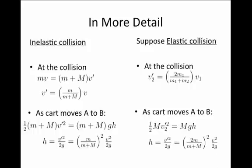So again, h is v2 prime squared over 2g, and if we insert for our solution for what is v prime, we have 2m1 squared over the sum of the masses squared times v squared over 2g.